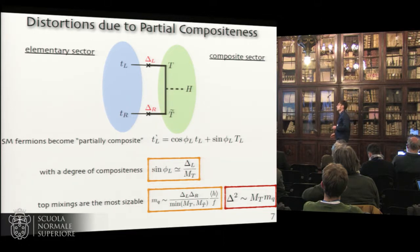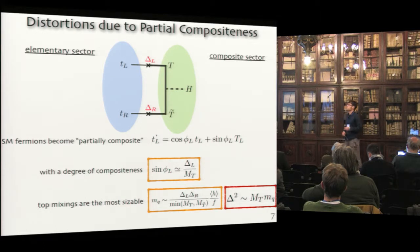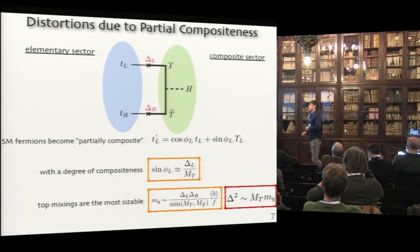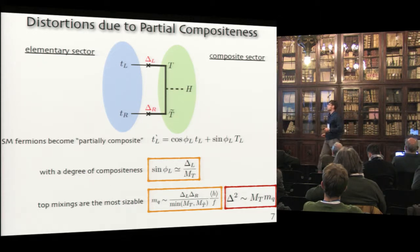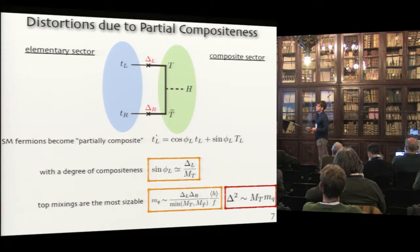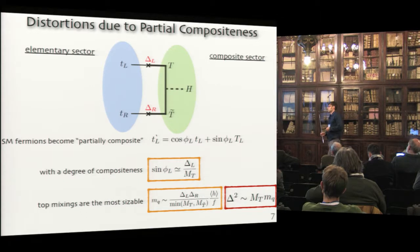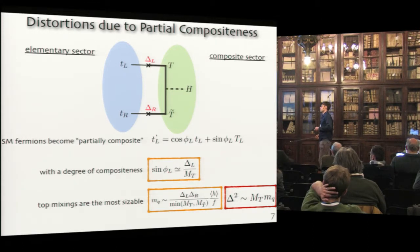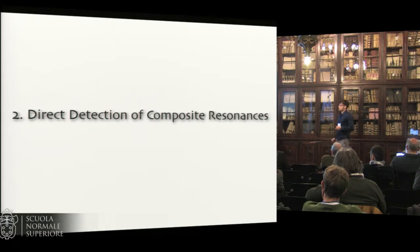Another source of coupling distortions is partial compositeness. The standard model couples to the composite sector via linear mixings, and the observed standard model mass eigenstates are partially composite. This degree of compositeness defines how massive they are and also mixes particles with different quantum numbers, distorting couplings of fermions to vector bosons. Given that the top is the most massive, it is expected to be the most composite, so the largest modifications are expected in the top sector.